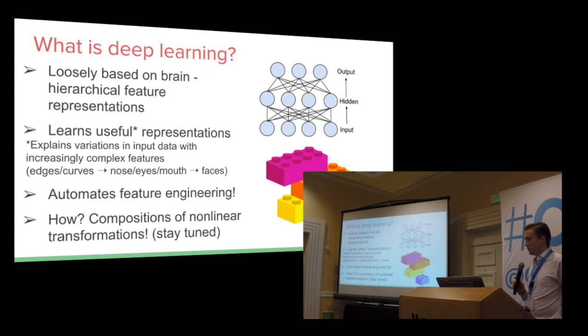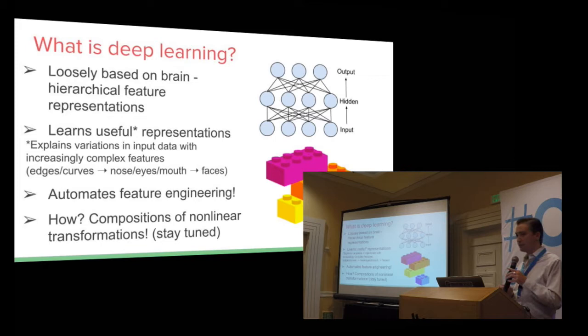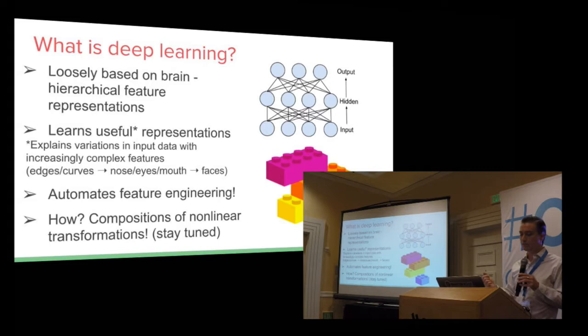So what is Deep Learning? It's very loosely based on the brain. It's just a way to hierarchically represent your input features. By hierarchically representing features, you get an exponential increase in the amount of inputs you can represent based on the number of layers you're adding one at a time. As you can see in the top right image, you have your input features that connect to some hidden layer that can connect to multiple other layers before getting your output. And what this does is it learns useful representations given enough data.